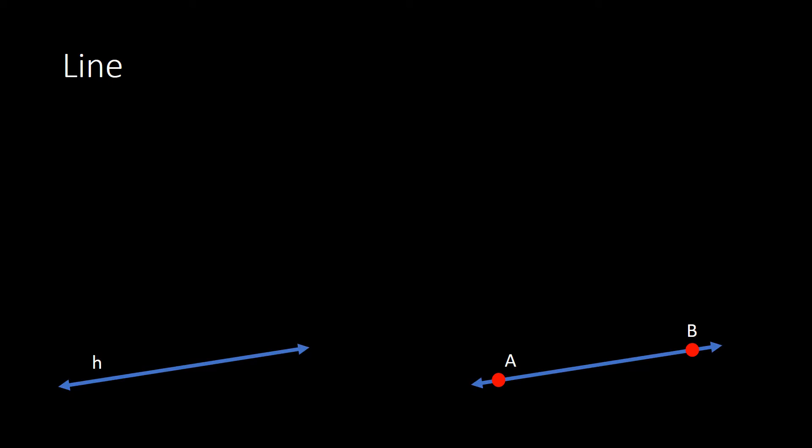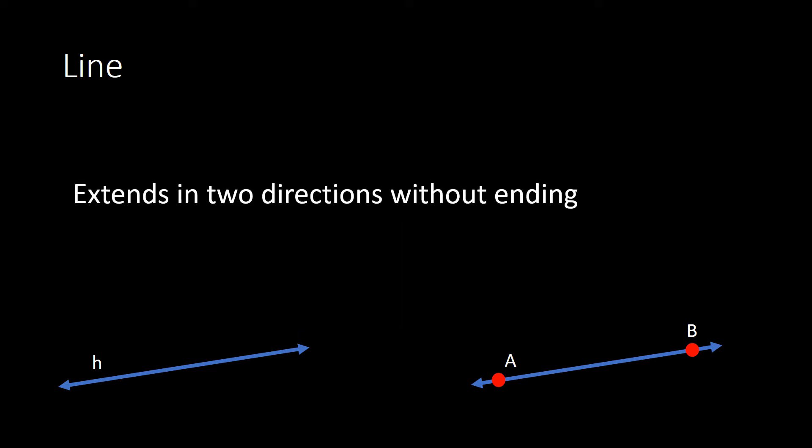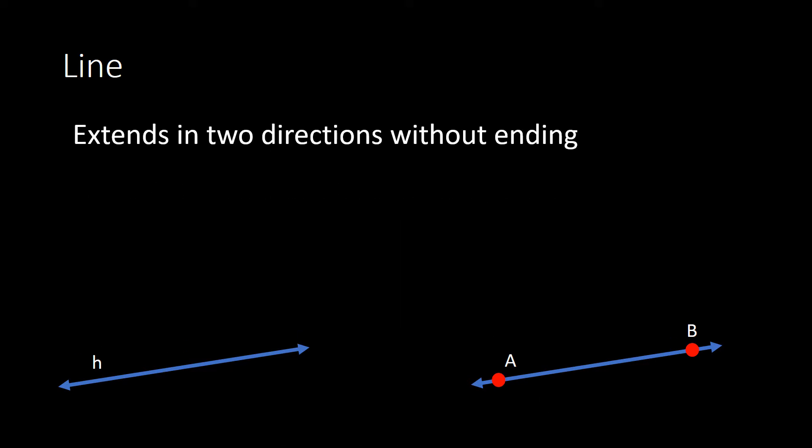Now looking at the next undefined term, and that's the word line. I think most of us know what a line is and what it looks like, but a few more descriptions. We see here there are two lines represented. We can describe them as they extend in two directions without ending — they keep going forever and ever. A line has no thickness. Just like a point has no size, a line technically has no thickness. When we draw them on a piece of paper, there is thickness because of our writing tool, but technically in geometry, a line will have no thickness.